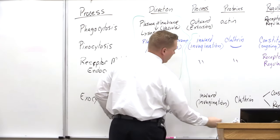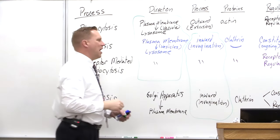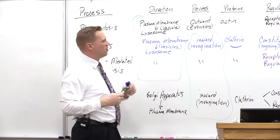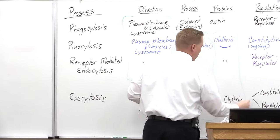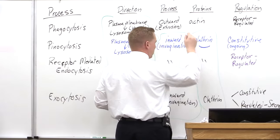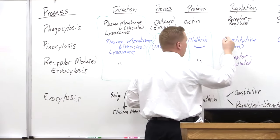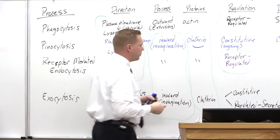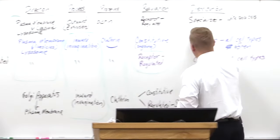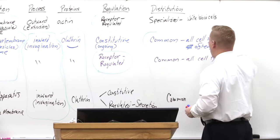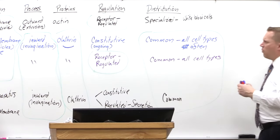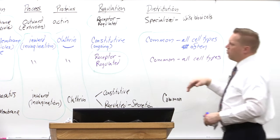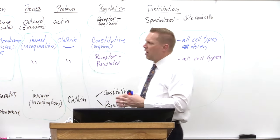Comparing these processes, many elements are the same across categories — phagocytosis is the most distinct, while pinocytosis and receptor-mediated endocytosis share most features. You don't have to memorize every individual piece; if you know some elements, they repeat across the other types of processes.